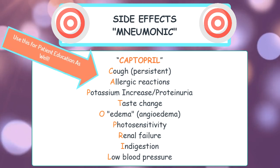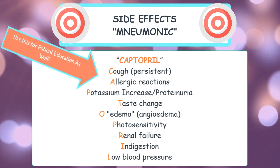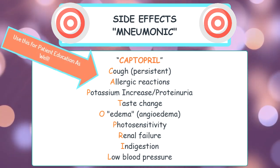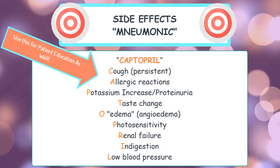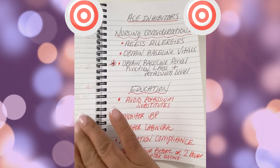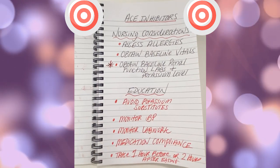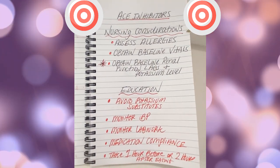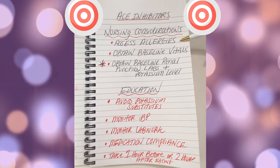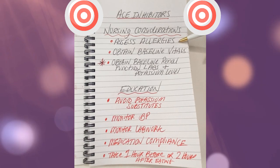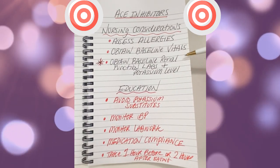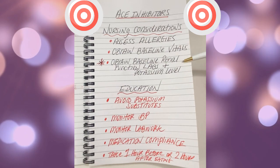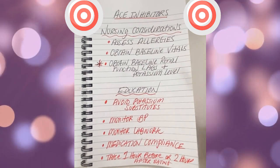This mnemonic not only allows you to understand more of the side effects of ACE inhibitors, but it's also a great tool for providing patient education. Here are some nursing considerations: always assess their allergies, obtain baseline vitals so that you know if the medication was effective, and obtain baseline renal function labs and potassium level.